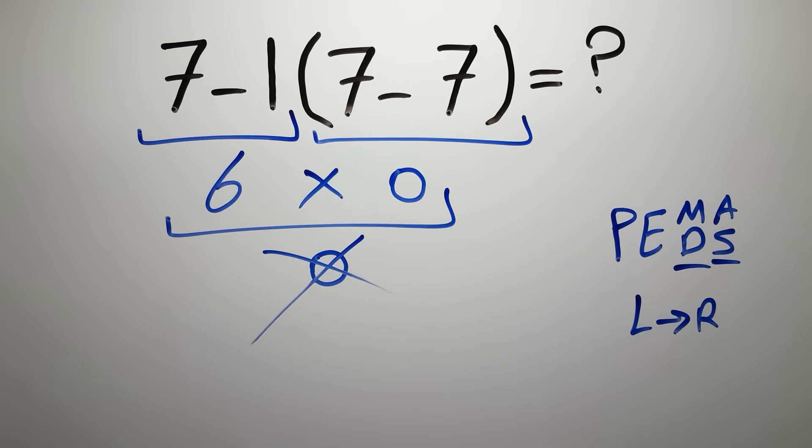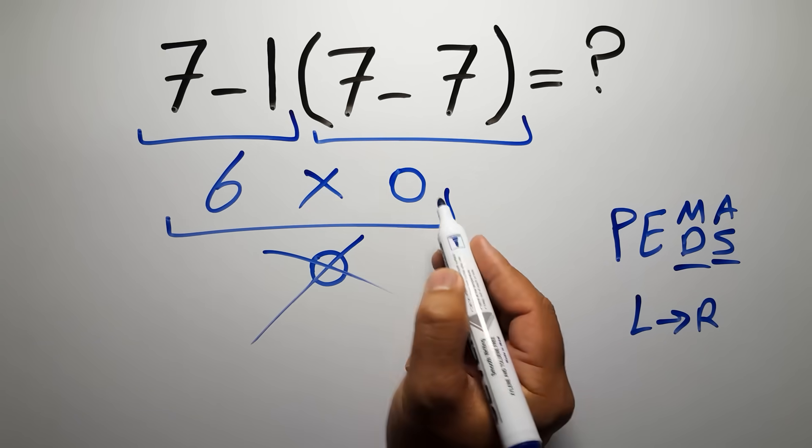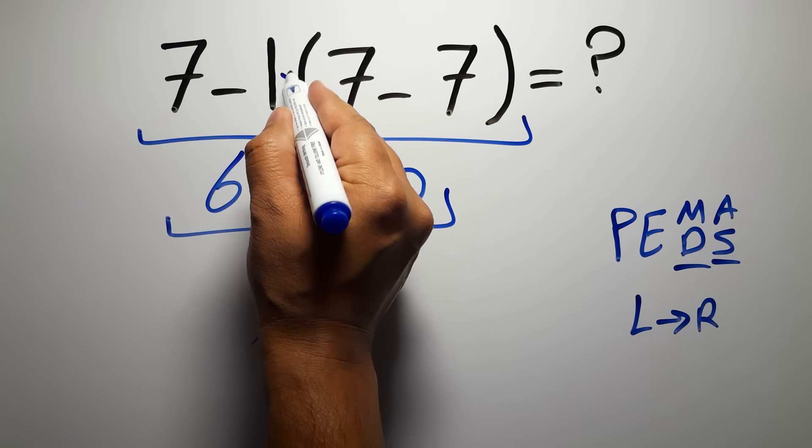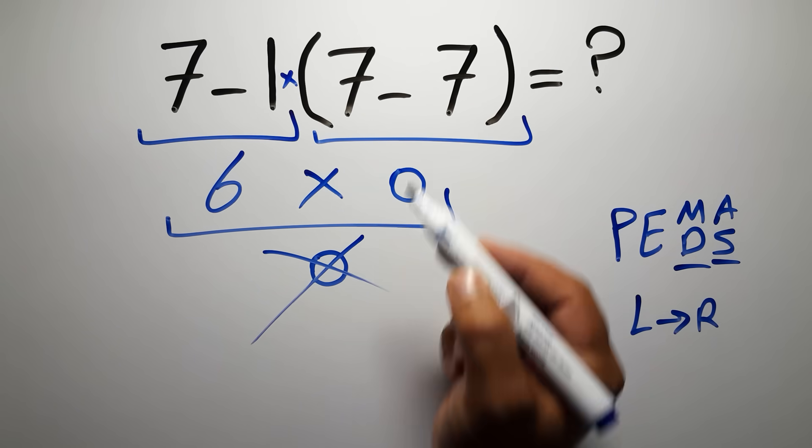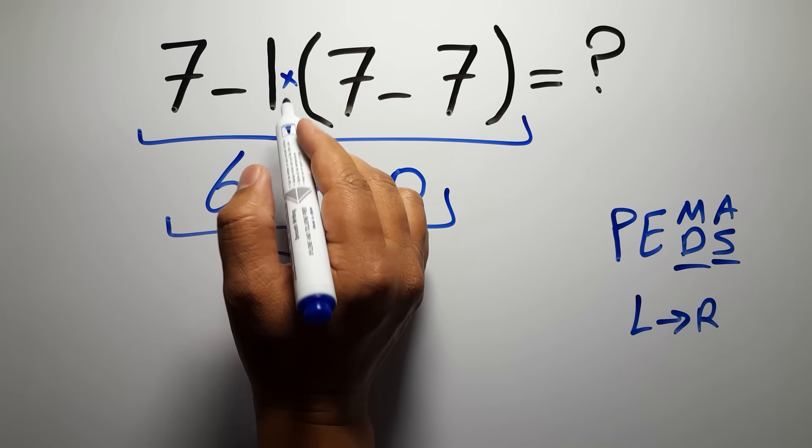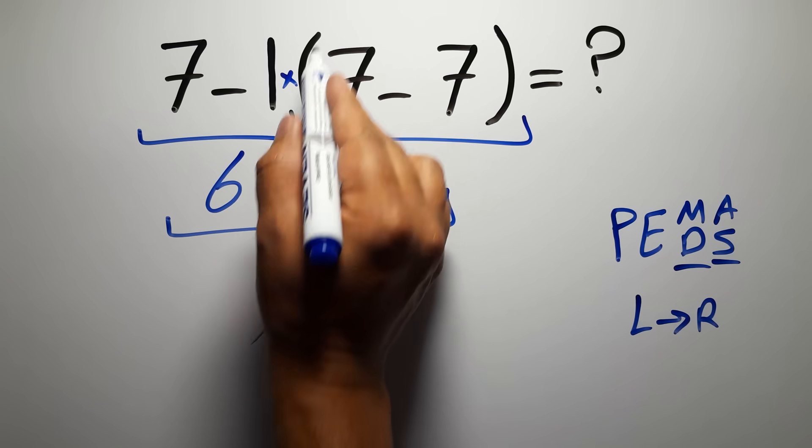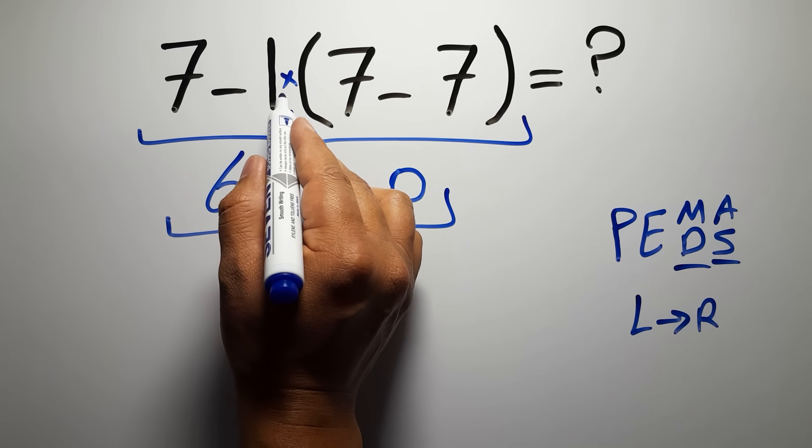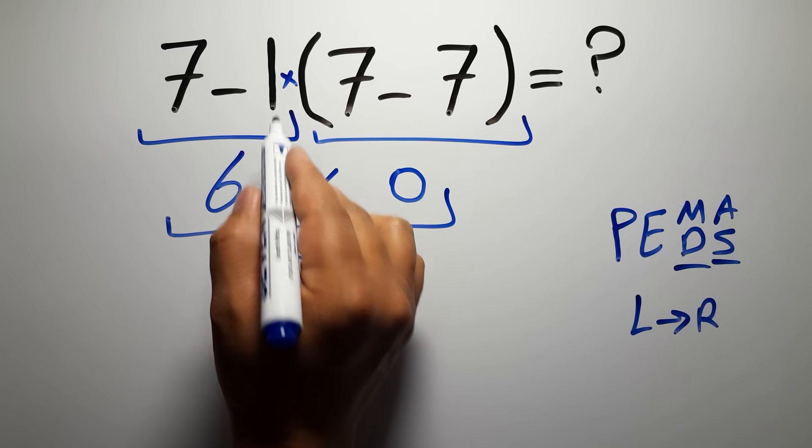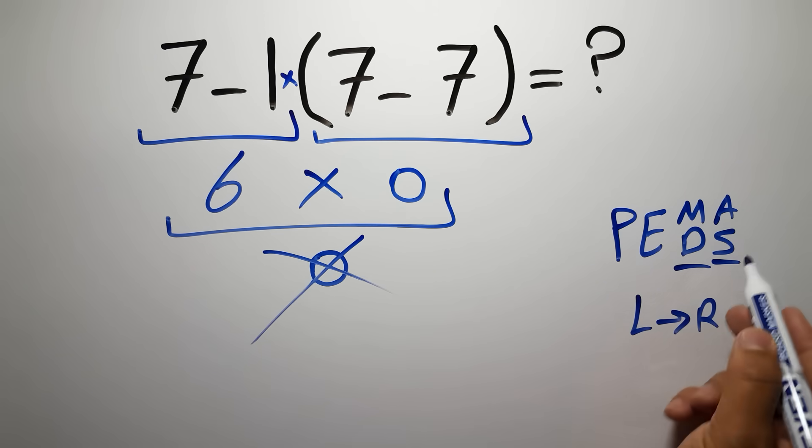In this expression we have one subtraction, one multiplication, and one parentheses. Inside these parentheses we have one subtraction. Here we have a multiplication because in mathematics when a number is placed next to parentheses it means multiplication, and we usually don't write the multiplication sign for brevity.